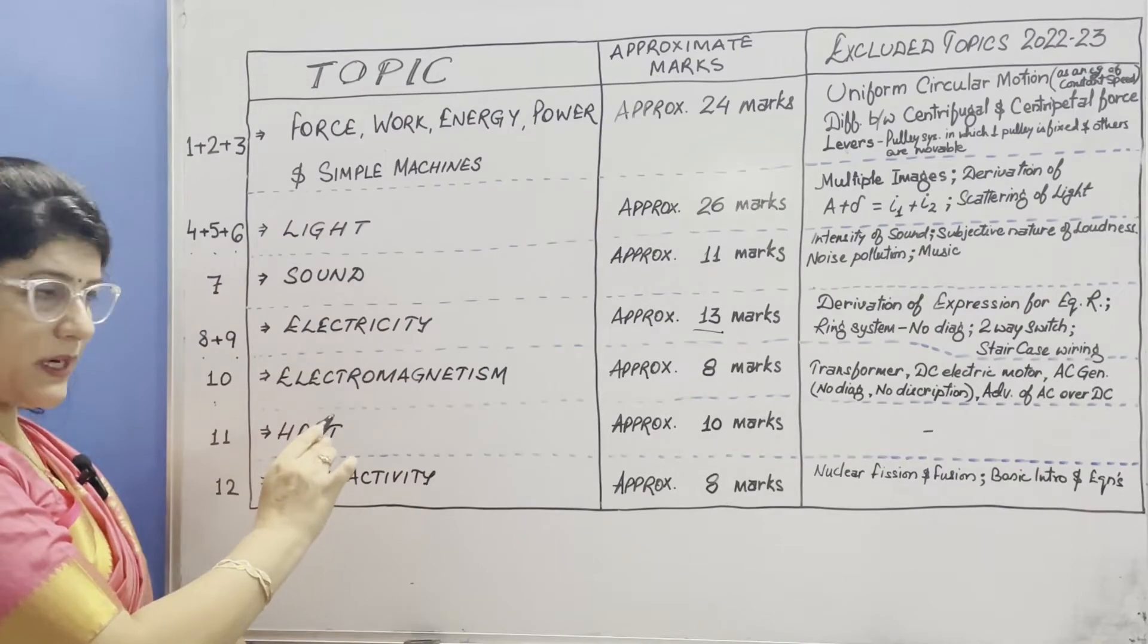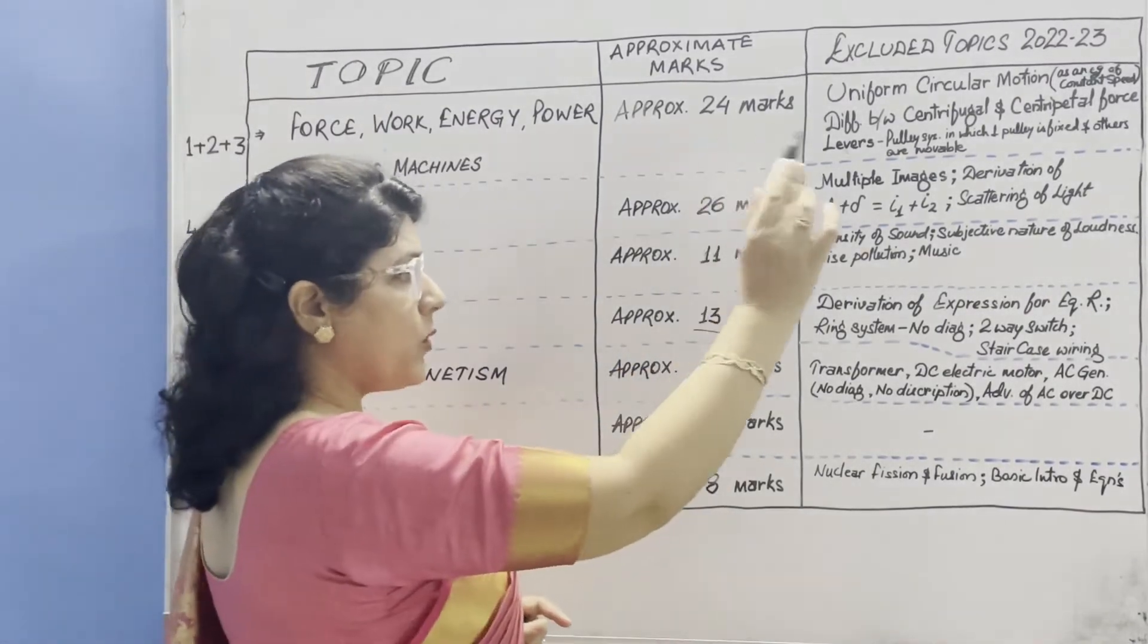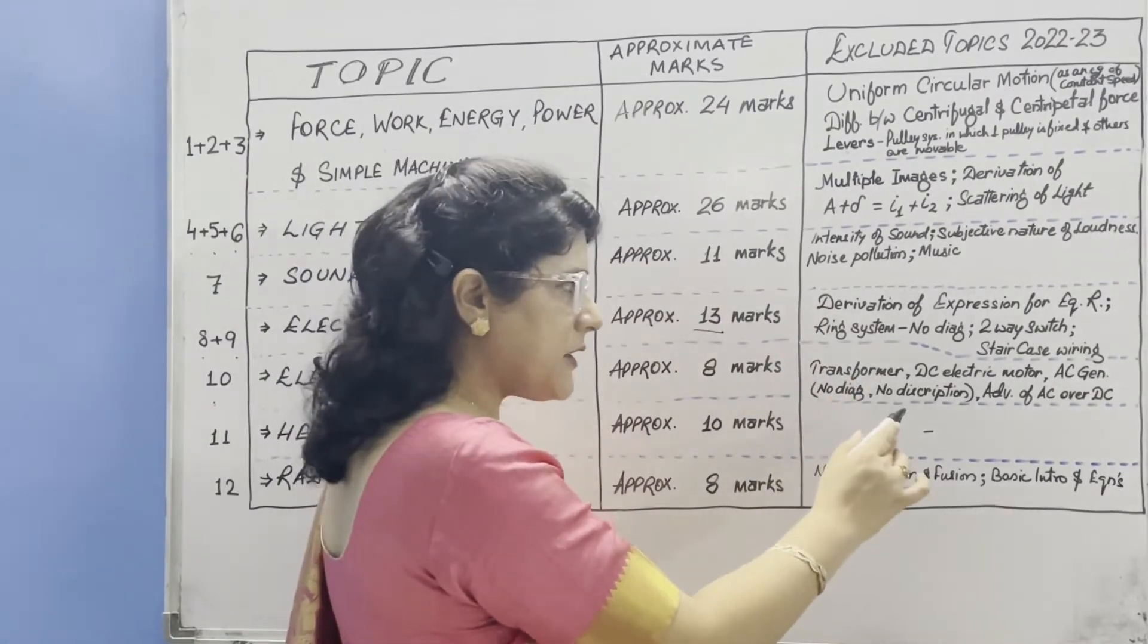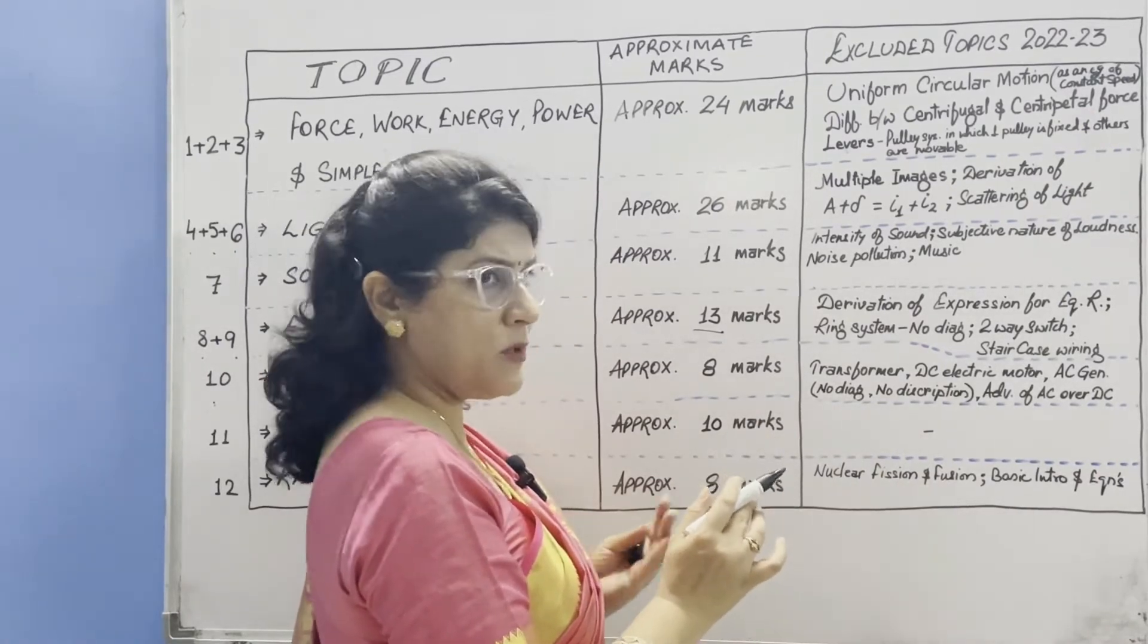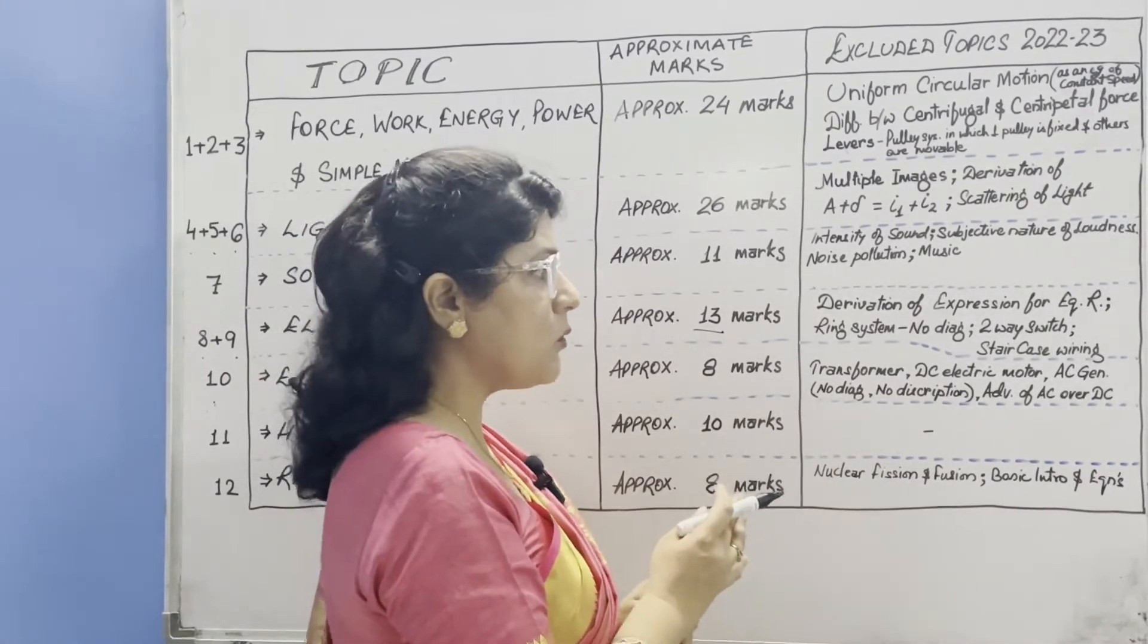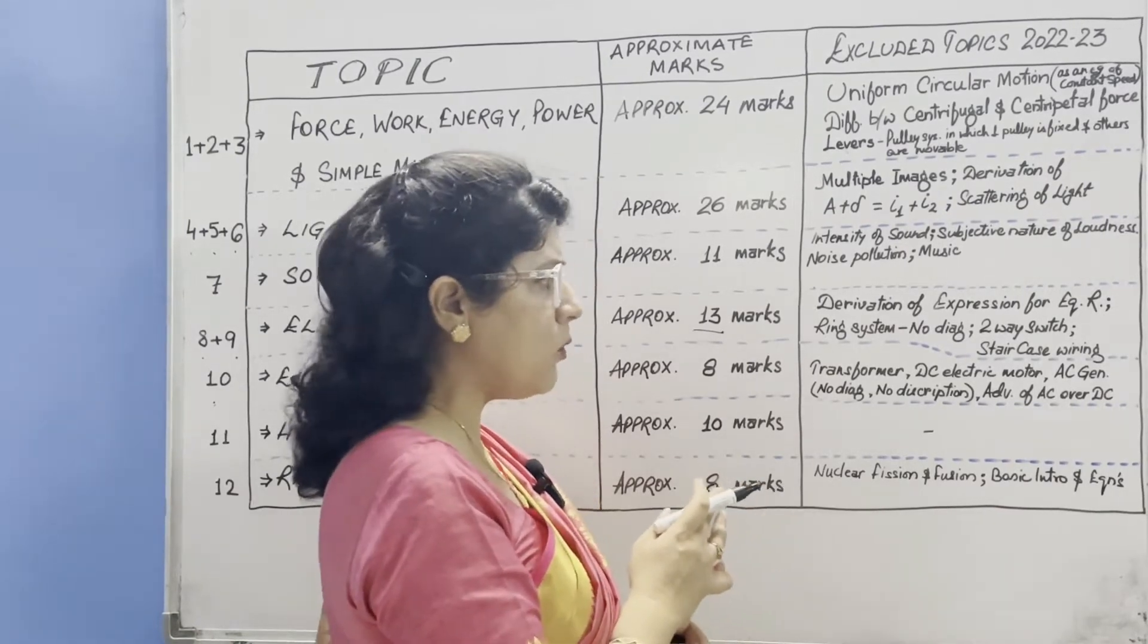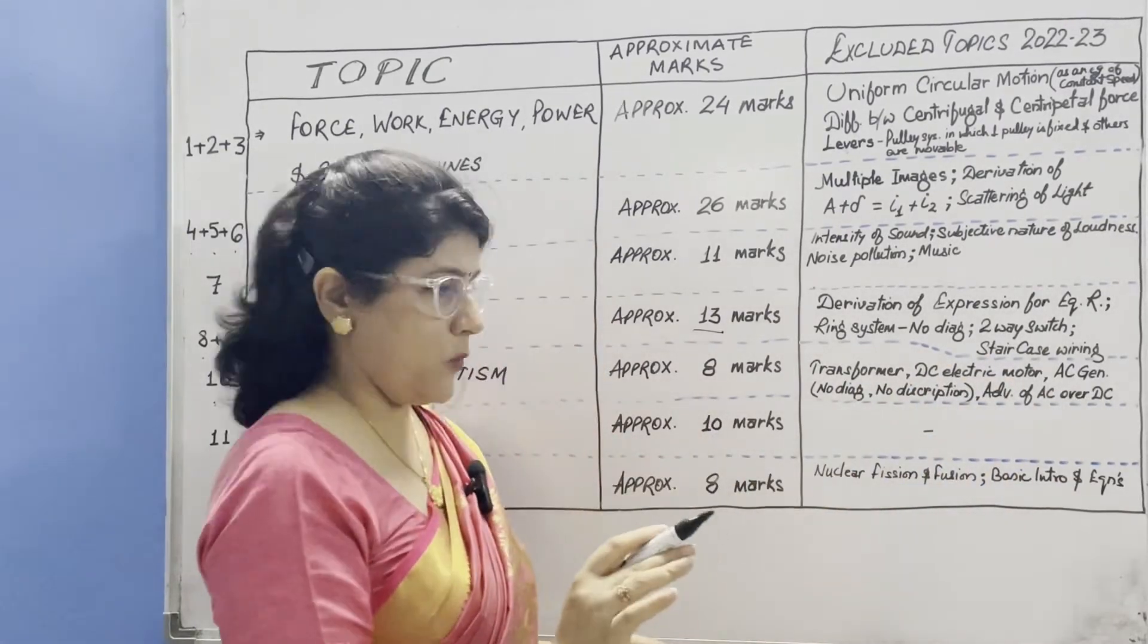Next topic is electromagnetism which is chapter 10 carrying 8 marks approximately. Excluded topics are transformer completely excluded, DC electric motor and AC generator - no diagram and no description related to their working. But other rules and laws are there: Lenz's law, Fleming's left hand rule, Fleming's right hand rule all are there. And advantages of AC over DC is also excluded.